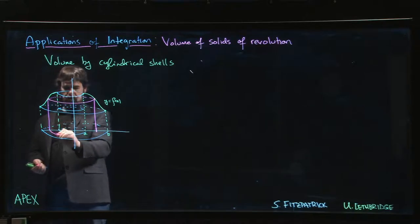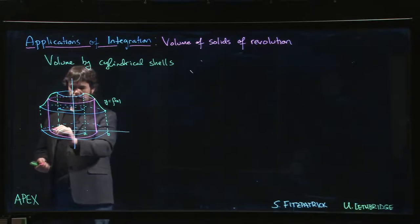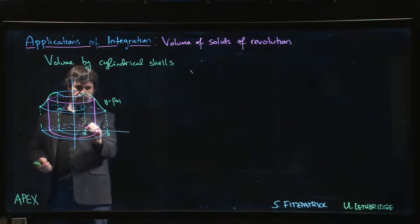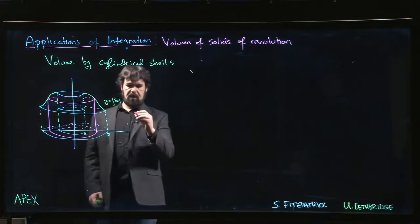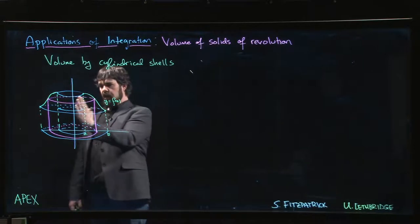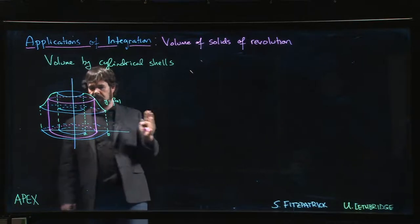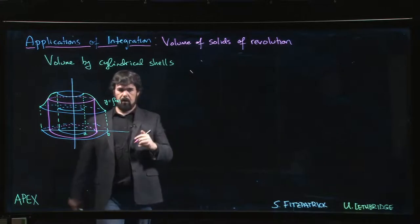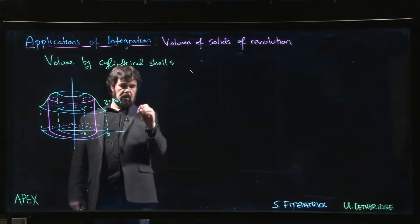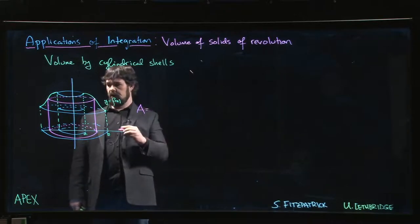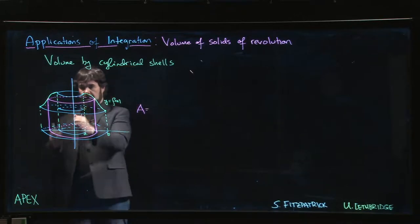If we take that vertical segment and revolve it about the axis, we generate a cylinder. The surface area of that cylinder—because we're not including the top or the bottom—what is the surface area of that cylinder?